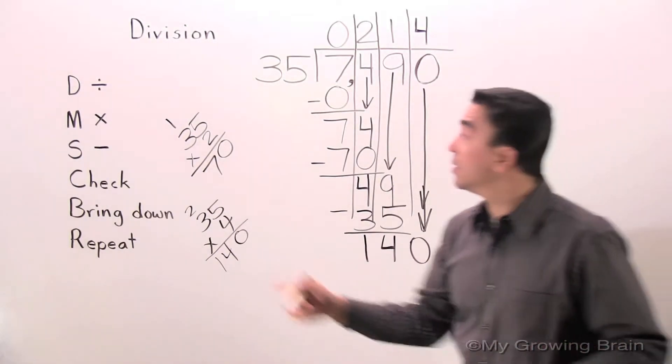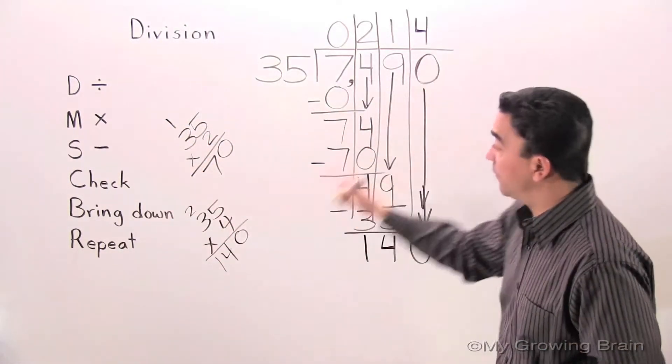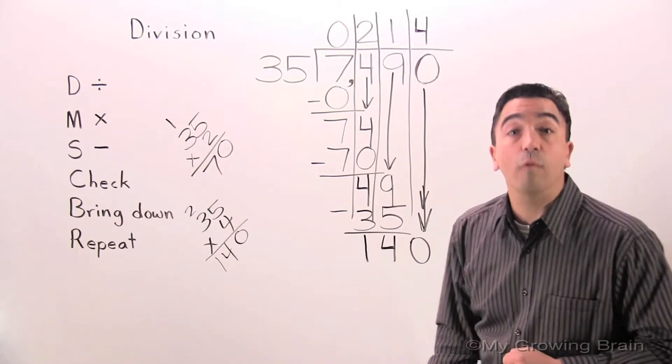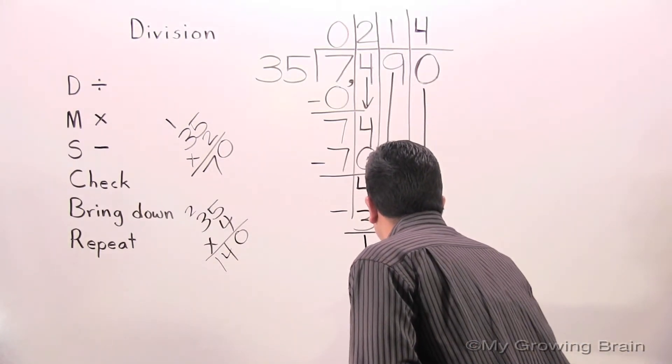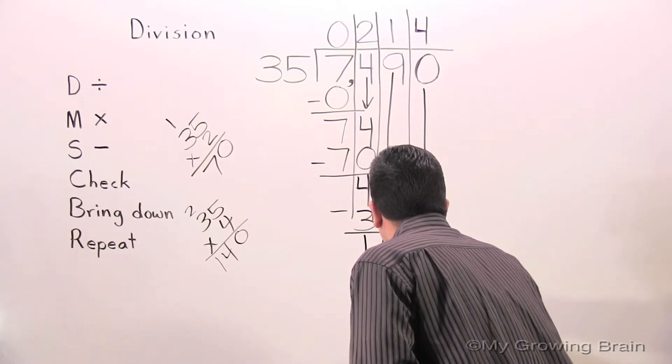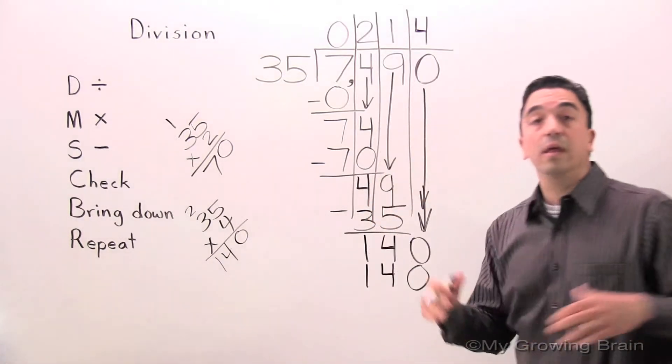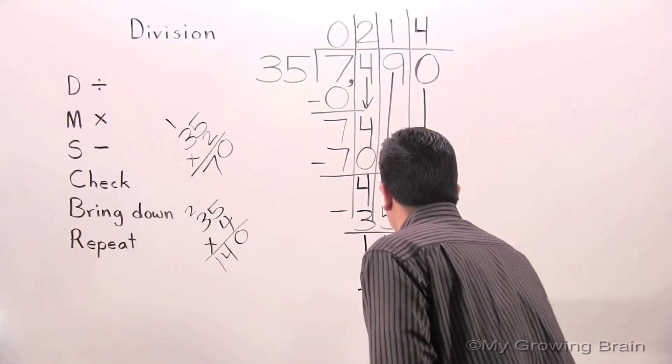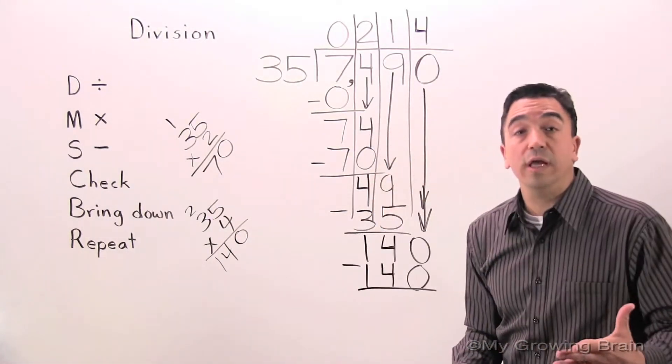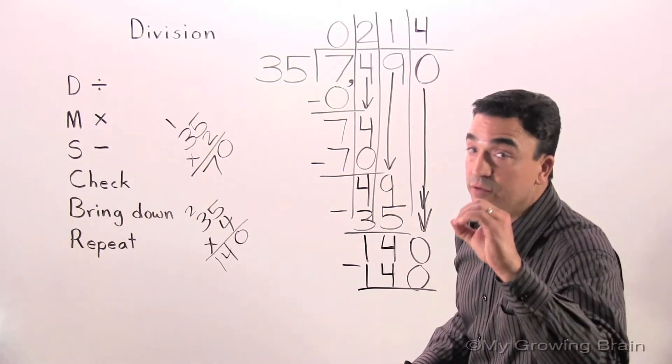Next step. Multiply. 35 times 4 equals 140. Next step. Subtract. 140 minus 140 equals zero.